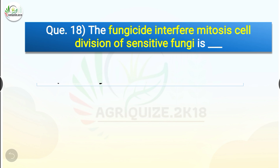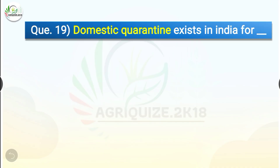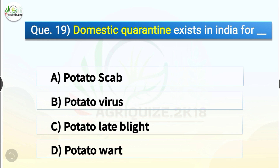Question number eighteen: The fungicide that interferes with mitosis (cell division) of sensitive fungi is dash. The options are benomyl, carbendazim, thiabendazole, or all of the above. The correct answer is option D, all of the above. The fungicides which interfere with mitosis cell division of sensitive fungi are benomyl, carbendazim, and thiabendazole.